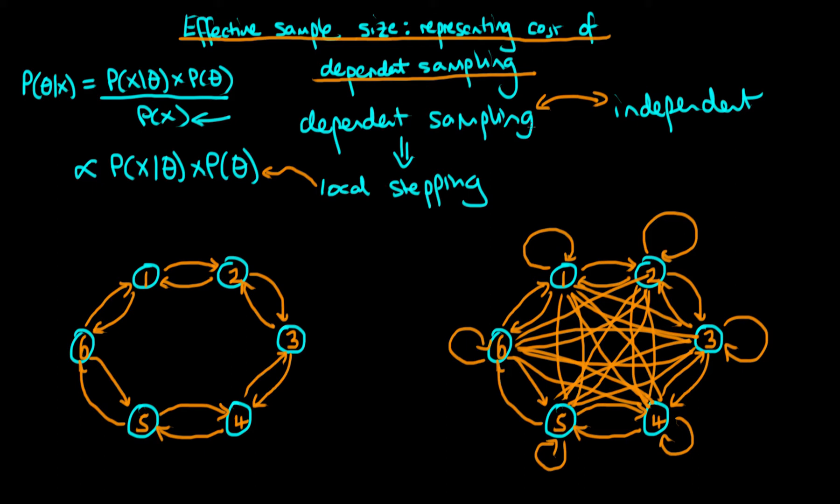Why is the incremental information less? Because in a dependent sampler, wherever you step next depends on your current location. So we're not as uncertain about where we will step next. Because we have lower uncertainty and hence lower entropy over where we will step next, the informational value of a dependent sampler is less than that of an independent sampler.